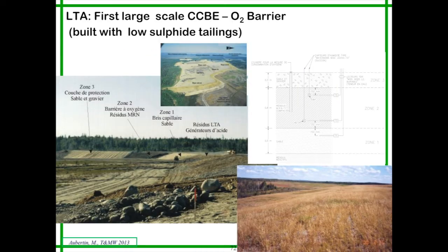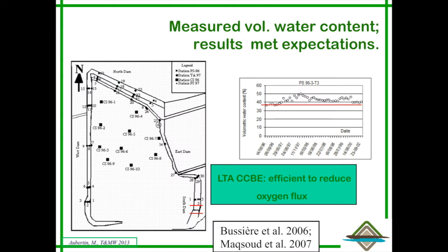This technology has been applied also on a large scale at many locations, including this one, the LTA site that belongs to Barrick. This is a three-layered system, and the middle layer here is made of tailings, non-reactive tailings. So it is possible to use tailings because they have all the properties that are needed to retain the moisture. This has been monitored since 1996 and analyzed. This is the tailings impoundment with monitoring stations. This is an example of how the water content in the moisture retention layer evolved over time. This was the target value that we needed to maintain. This was 85% degree of saturation to make sure that the flux of oxygen was low enough not to produce acid mine drainage.